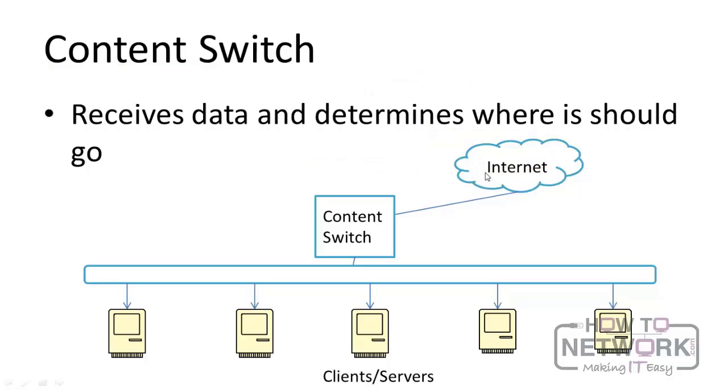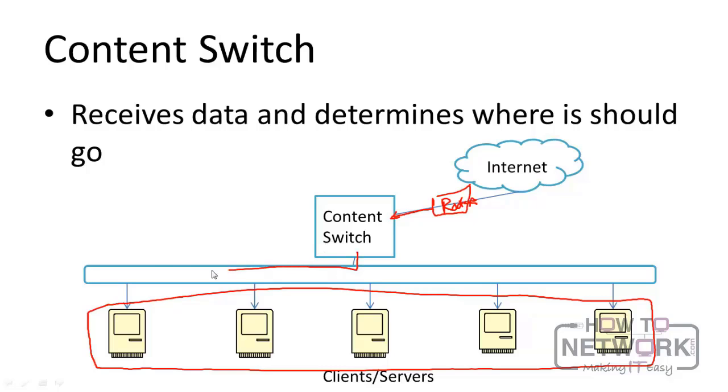So for instance if I erase all this for a second, let's say we have a router right here which allows us to connect out to the internet, and then information comes in straight from the router to the content switch. And we don't know where the information is set for, or let's say we have six different clients or servers, it doesn't really matter, that each could operate under the same sort of IP address, for instance we're gonna put them all together or group them. The content switch can say which one it's going to go to based on the type of information it's receiving.